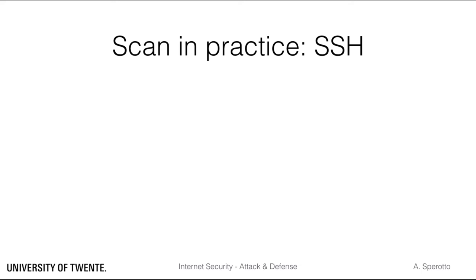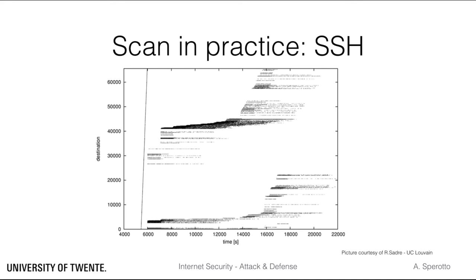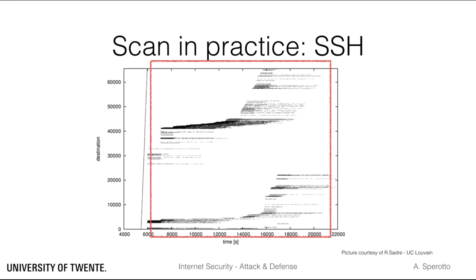Scans are typically the first steps of a more articulated attack, and in practice a scan and a different type of attack, like password guessing, are often combined. In this picture, you have a representation over time of an SSH dictionary attack measured at a university campus. On the x-axis there is time; on the y-axis we have a numerical identifier of the IP addresses. A dot indicates that there has been a communication between the attacker and the host. The first step is to identify hosts with an active SSH service — a scan on port 22 — which can be clearly seen as a line. Then the attack directly progresses to brute-forcing username-password combinations.